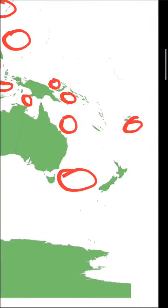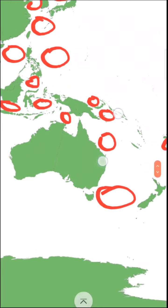Let me show you seas in Pacific Ocean. Here we have Tasman Sea, Koro Sea, Coral Sea, Soloman Sea, Bismarck Sea.